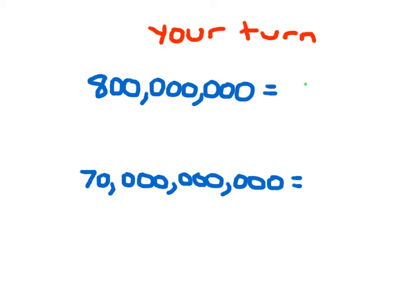For that first one, did you get 8 times 10 to the eighth power? And for that second one, it should be 7 times — counting the places: 1, 2, 3, 4, 5, 6, 7, 8, 9, 10 — 10 to the tenth power.